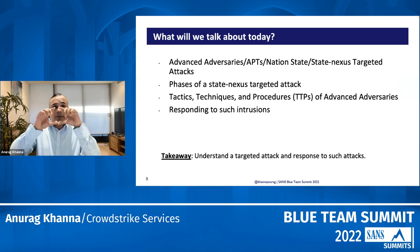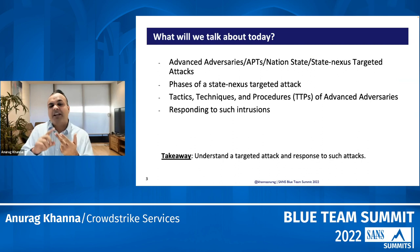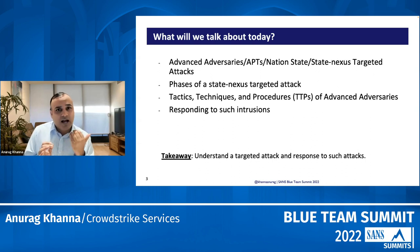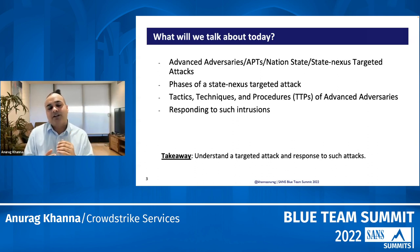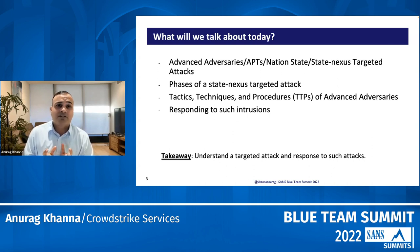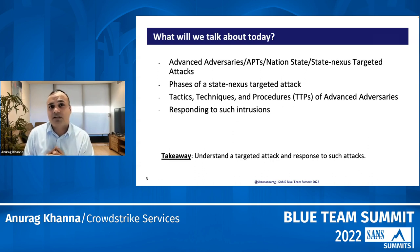We are going to talk about the top tier adversary — the bucket which is often known as nation-state actors, state nexus. What they are there for is a targeted attack. We're going to start by talking about the phases of a state nexus targeted attack. I'll take a wider picture and outline the three phases of how these attackers work. Then we're going to deep dive and talk about a few TTPs of these advanced adversaries. I've picked some of the more commonly used techniques to give us a frame of reference.